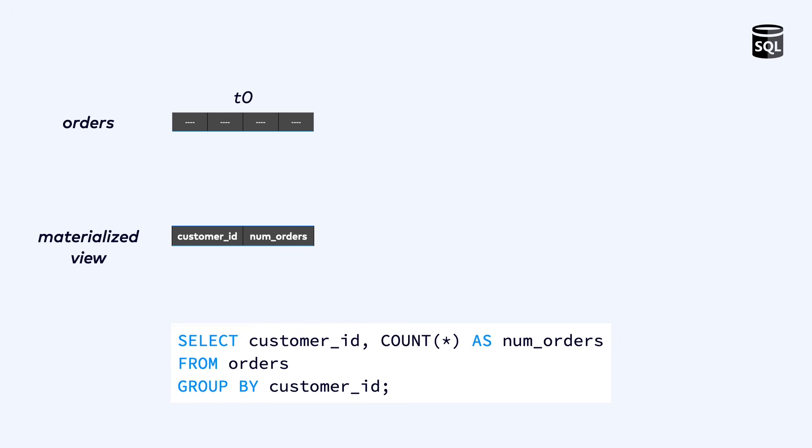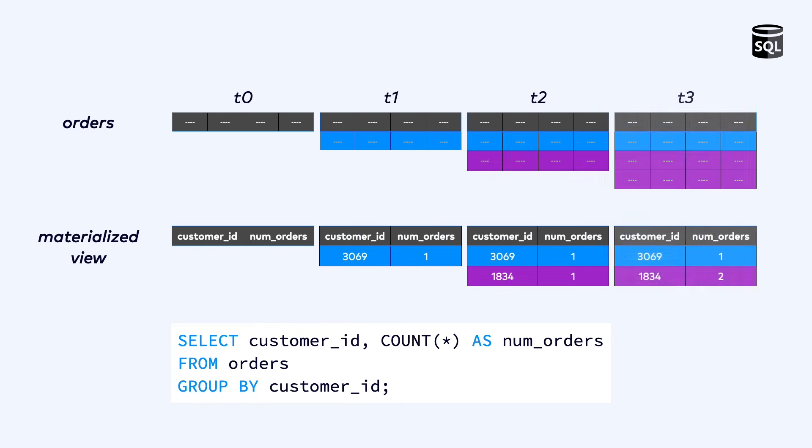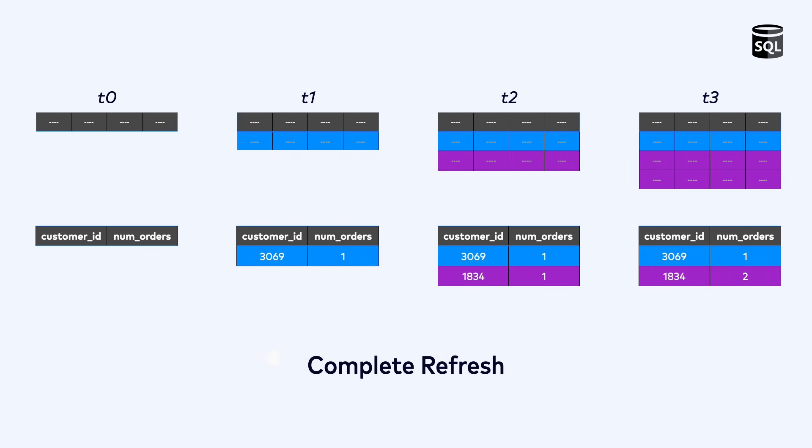The first time this query is accessed, the table will be scanned, but now the database will cache the result. If this view is accessed again before the underlying table is updated, the database can immediately respond with the cached result. And as the underlying orders table is modified, for example by inserting new orders, then the materialized view can update the cache accordingly. The simplest way for a database to refresh a materialized view is to re-execute the query in its entirety after each update. This is expensive, but straightforward, and it's still worthwhile if the view is read more often than it is written. This is the complete refresh strategy for materialized view maintenance.